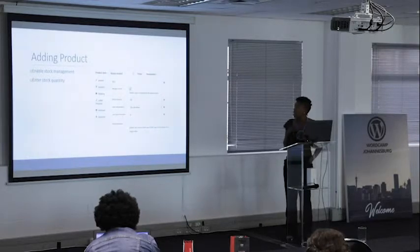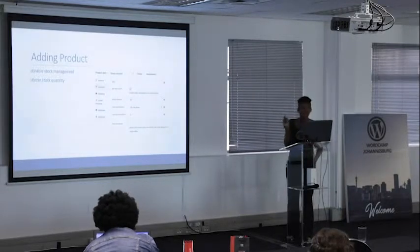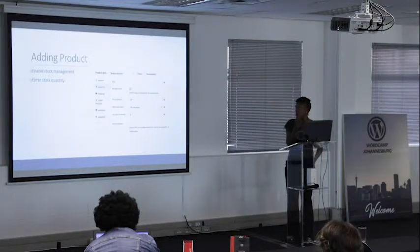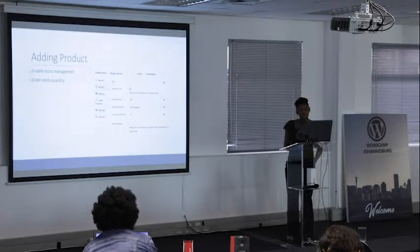There's an option to enable stock management at product level. If you don't click that, the website won't keep track of your stock online. We're going to enable it so we can update stock levels when someone buys online. We enable stock management and put in a stock quantity — let's say 20. We can also decide if we allow back orders. If we allow back orders, our stock can go below zero because people can order even when we don't have stock.